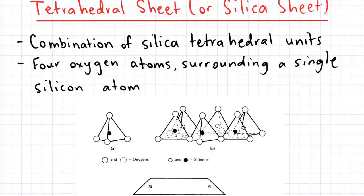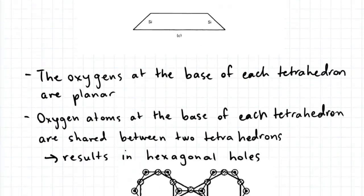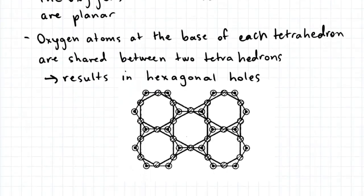You can see in this diagram that the oxygen atoms at the base of each tetrahedron lie within the same plane and that each oxygen atom is shared between two tetrahedrons. If you look at this next diagram which shows the top view, you can see this formation results in the sheet having hexagonal holes.